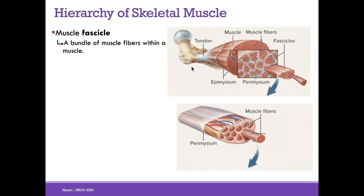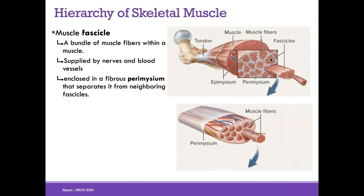Zooming into the muscle and looking at fascicles: a fascicle is a bundle of muscle fibers within a muscle. These are again supplied by nerves and blood vessels, and each fascicle is enclosed in perimysium that separates it from neighboring fascicles.